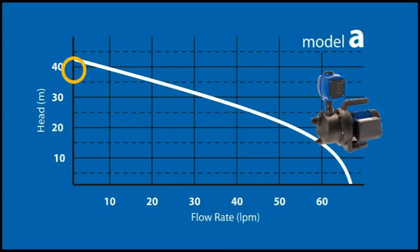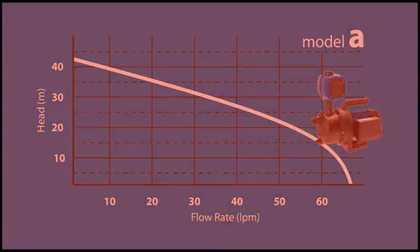On the graph, find 39 metres of head on the vertical axis, and run an imaginary line across the graph. At the point your line crosses the pump curve, draw another line directly down the graph to the flow rates along the horizontal axis. This is the flow rate your pump can deliver when working against the pressure you have calculated. Is the pump able to produce the flow rate required? In the case of model A, the answer is no.